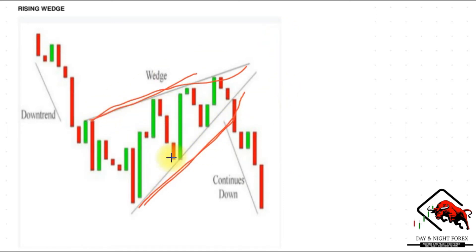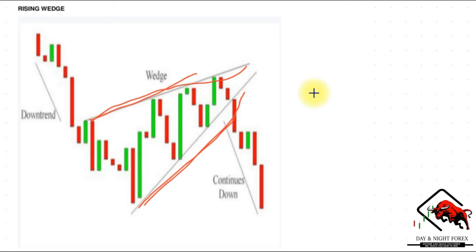The slope of the support line is much steeper than that of the resistance, because the price is making higher highs but they are very small compared to the higher lows. The higher lows have more momentum to the upside, meaning the support line is steeper and more sloped than the resistance. This indicates that higher lows are forming faster than higher highs, leading to a wedge-like formation, which is exactly where the chart pattern gets its name.